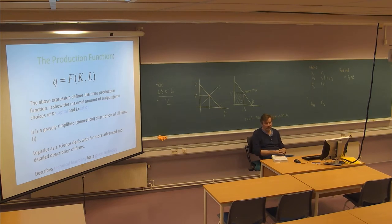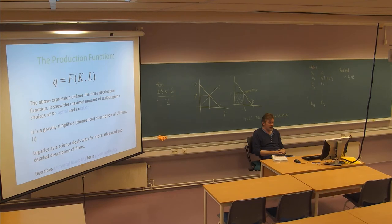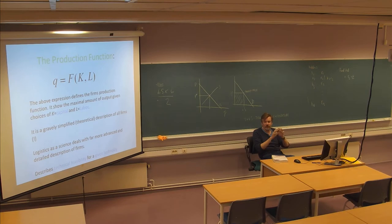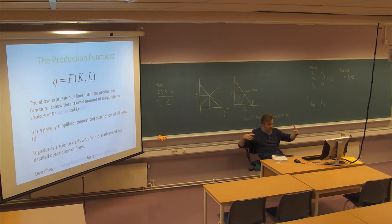In microeconomics we make this extremely easy. We assume the so-called production function exists, which shows the maximal amount of output given various choices of K (capital) and L (labor). We assume we can find some mathematical description of how our firm works: we input capital and labor into this function, and out comes our product in units.